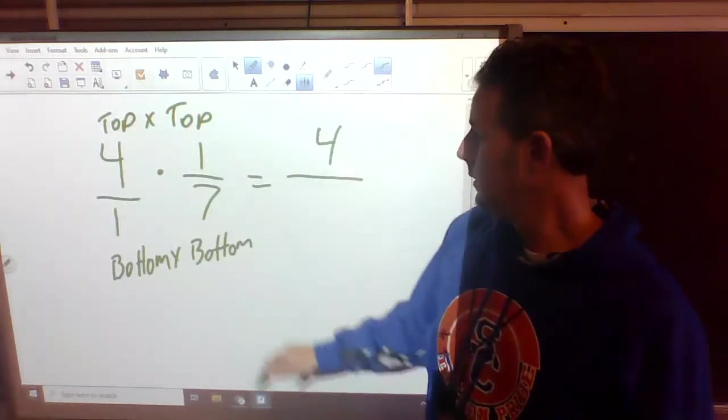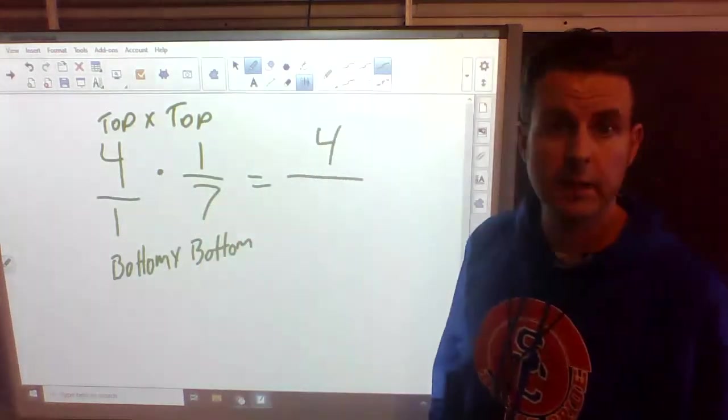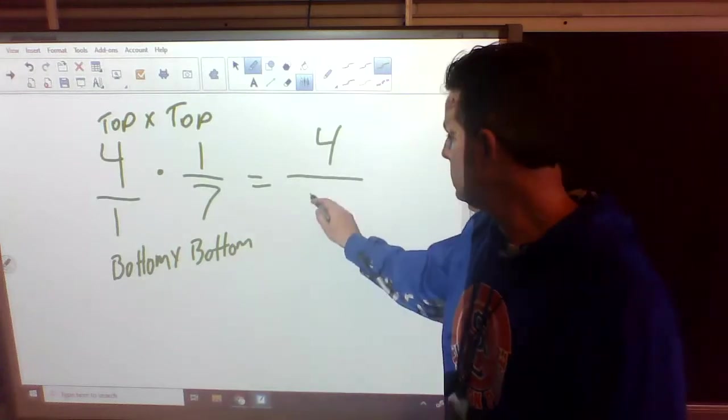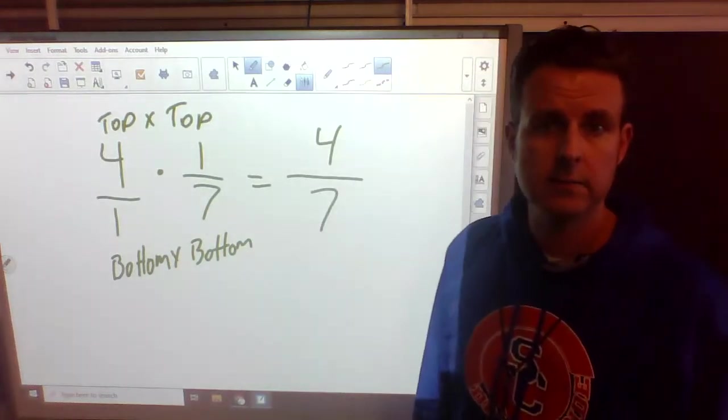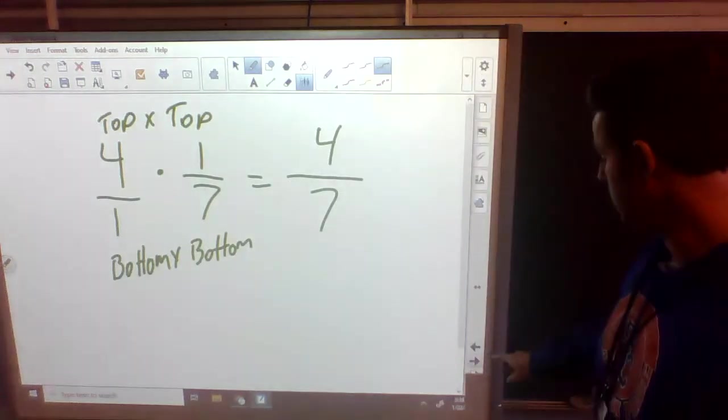4. What's 1 times 7? Bottom times the bottom. 1 times 7? 7. What's our answer? 4 sevenths. Let's do another one.